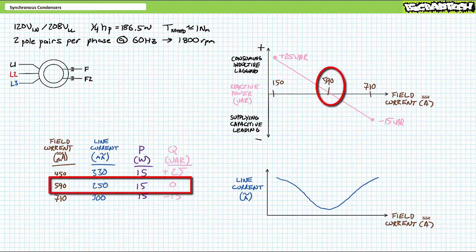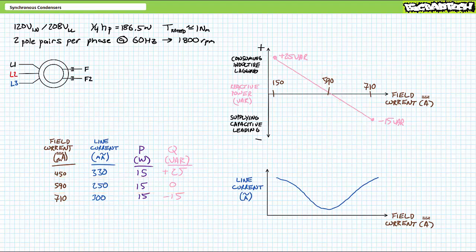When we dial field excitation current back down to 590 mA DC, the synchronous condenser draws 250 mA line current per phase, perfectly in phase with supply voltage, and neither draws nor supplies reactive power. Each winding consumes only 15 watts of real power to overcome friction and zero VARs of reactive power. This confirms the theoretical plots of reactive power as a function of field current and line current as a function of field current for electrically excited synchronous motors — the only difference being the synchronous condenser is mechanically unloaded.